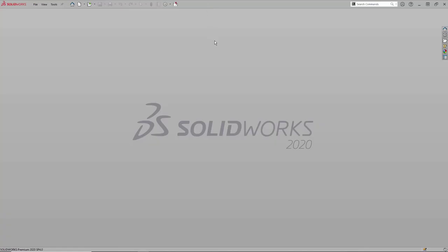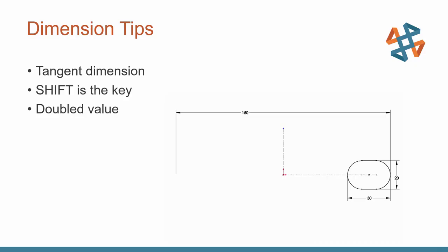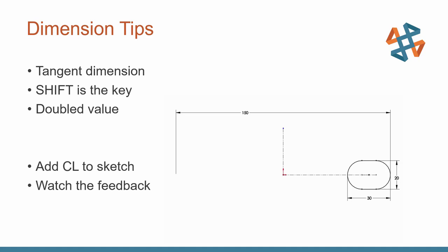So shift is the key. To double that value, you may need to add a center line to your sketch — that's fairly common. And watch the feedback: holding down the Shift key when dimensioning to arc tangencies, and also watch the feedback when moving the mouse from one side of the center line to the other.